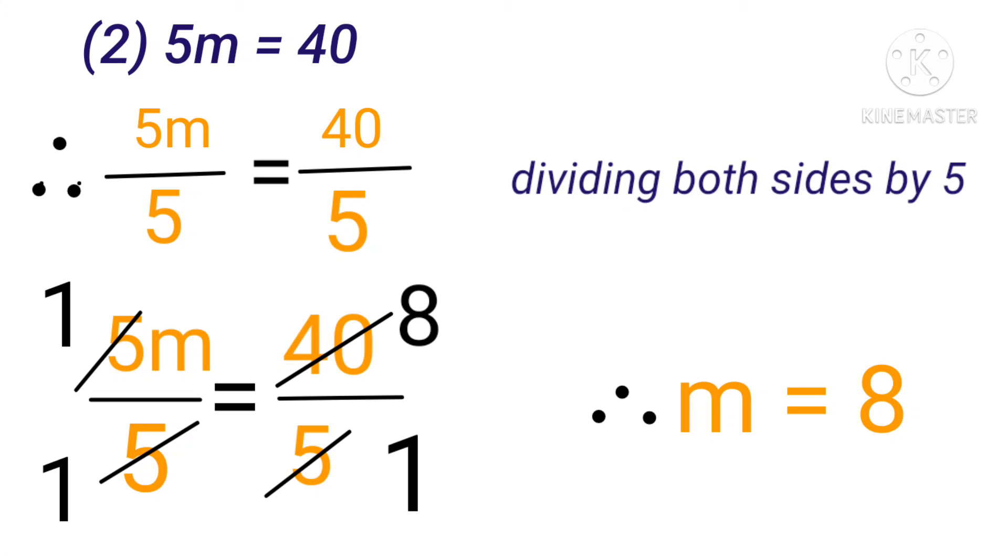In the next step, on the left hand side, 5 on the 5 means only m is remaining, and on the right hand side, 40 divided by 5 means m equals 8.